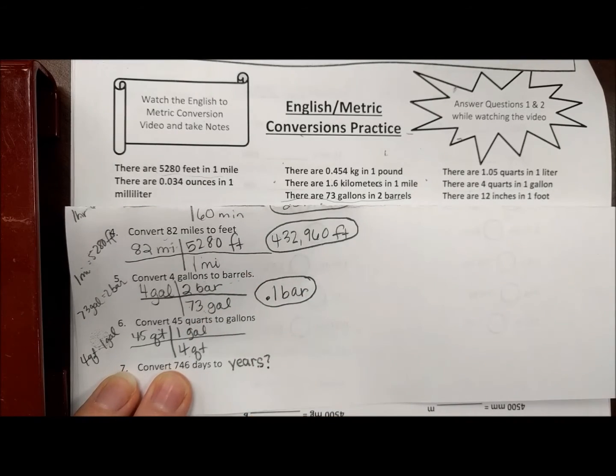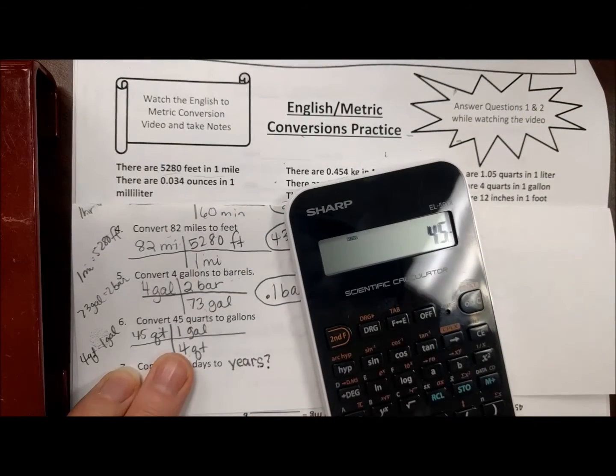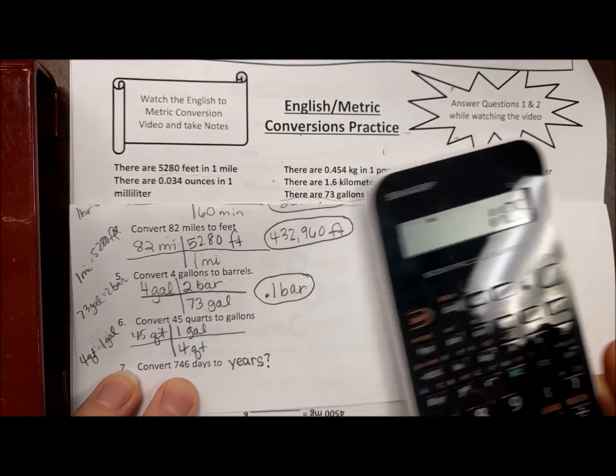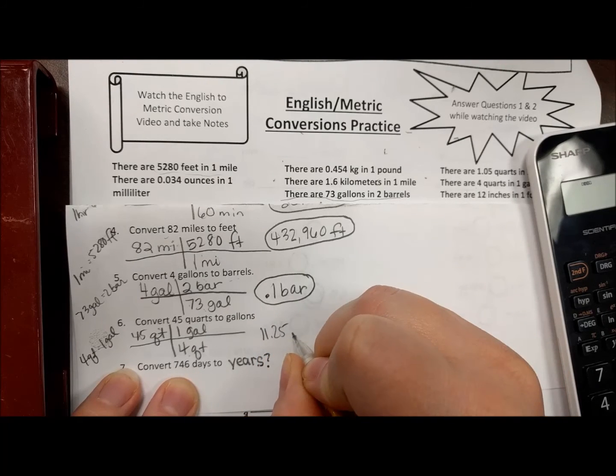So how we do this: we do 45 times 1 divided by 4. That's 11.25. If you wanted to round to 11, I'd be okay with that.